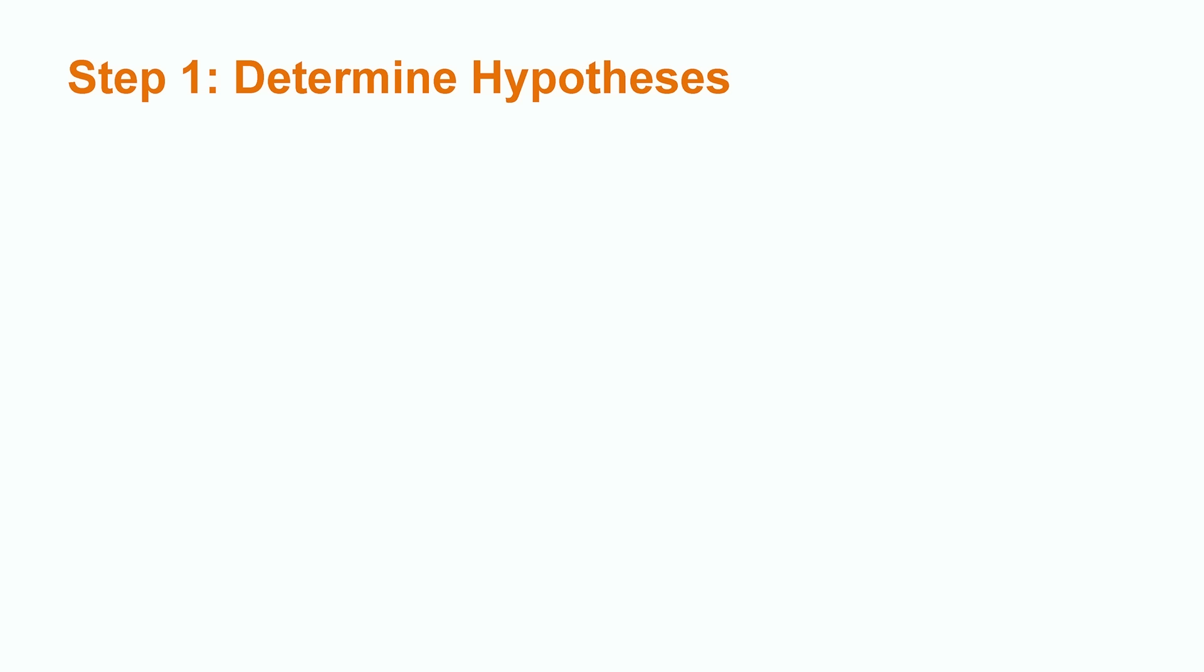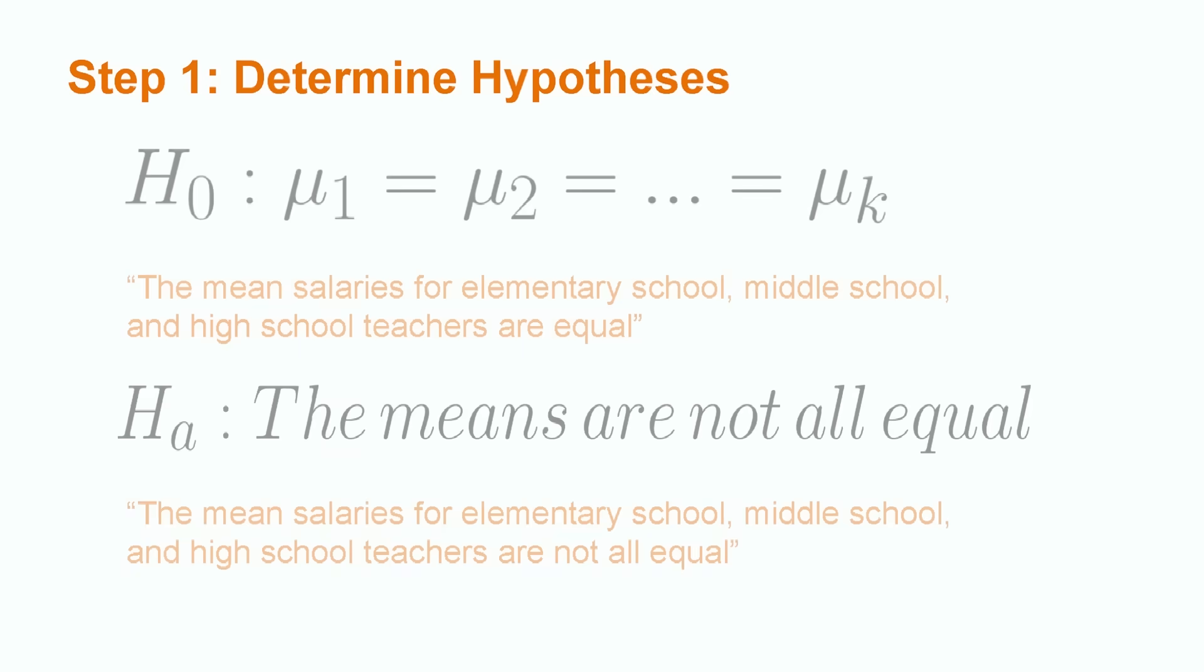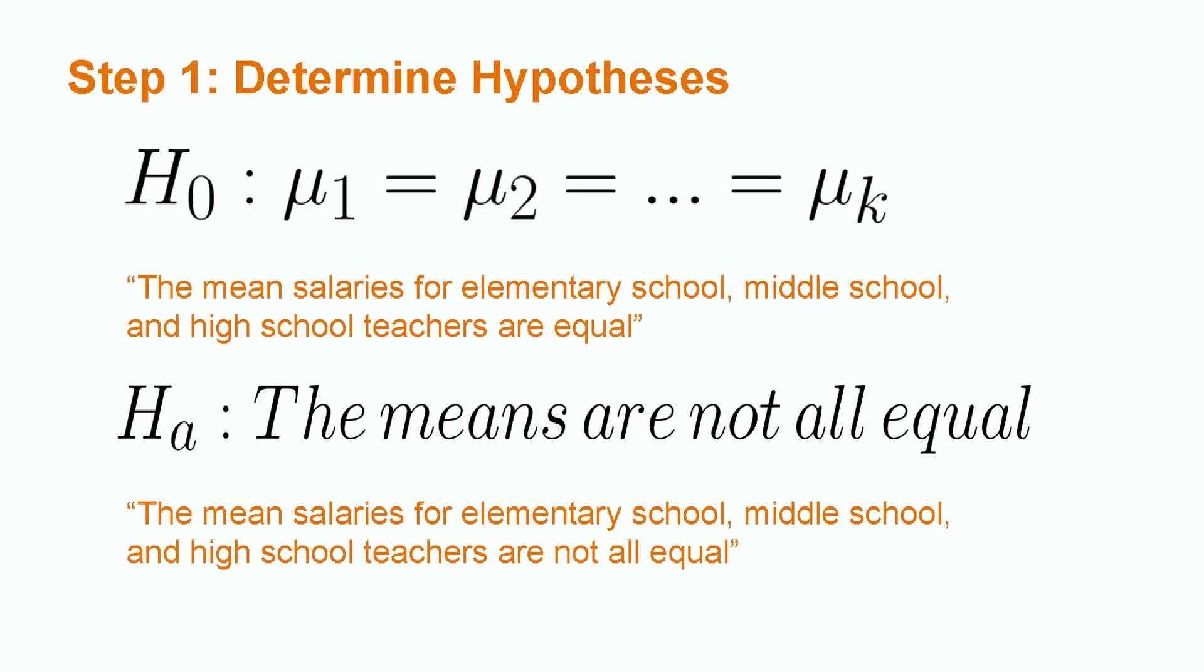The first step of the five-step hypothesis test is constructing a null and alternative hypothesis. For an ANOVA F-test, our null hypothesis assumes that all groups have equal means. We use a lowercase k to symbolize the number of groups we have. In the context of our example about the salaries of teachers,